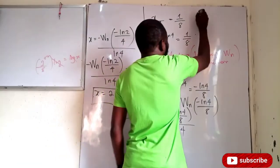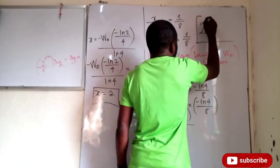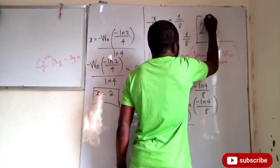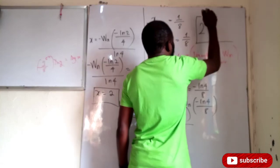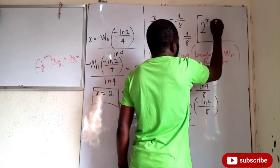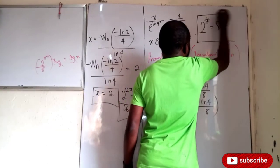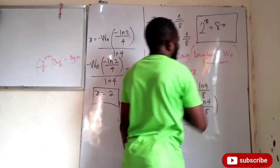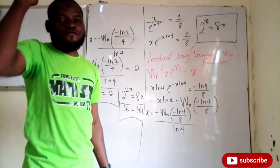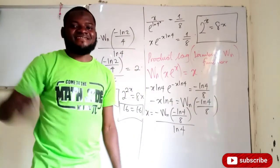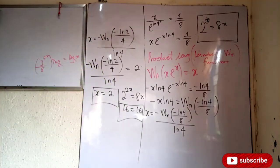Before I go, I would like you to try this on your own: if you have 2 to the power of 2 to the power of x, equals 8x, find the value of x. Have a nice day, guys!